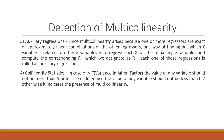Third: auxiliary regressions. Since multicollinearity arises because one or more regressors are exact or approximately linear combinations of other regressors, one way to find out if an x variable is related to other x variables is to regress each xi on the remaining x variables and compute the corresponding R-squared. The fourth method is collinearity statistics. For VIF, the value of any variable should not be more than 5; for tolerance, the value should not be less than 0.2. Physically, they are inverses of each other. If violated, it indicates the presence of multicollinearity.